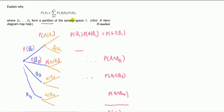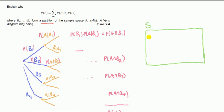Let's draw out the sample space — that's the list of everything, all outcomes that can occur. Now we need to know what is a partition. So B1 to B4 are events that form a partition of S. The definition of partition is as follows: B1 to B4 form a partition of S if two things are satisfied. One is that the Bi's are mutually disjoint — i.e., no intersection between them. And secondly, the union of those events, the Bi's, is equal to S.